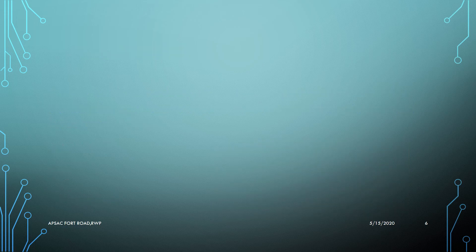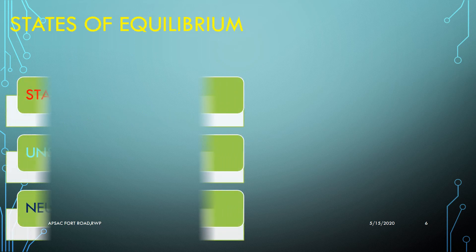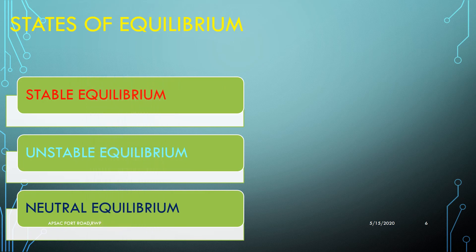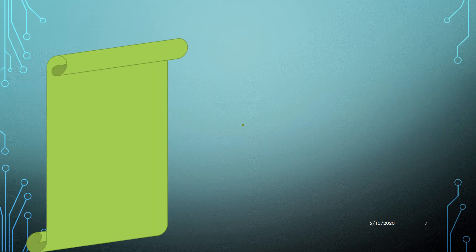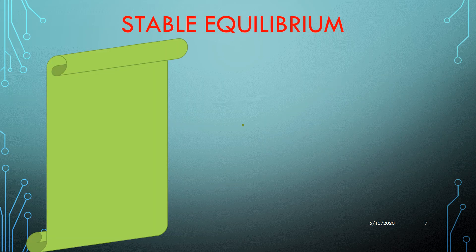There are three states of equilibrium: stable equilibrium, unstable equilibrium, and neutral equilibrium. A body may be in one of these three states. Now let us understand each of these states one by one.